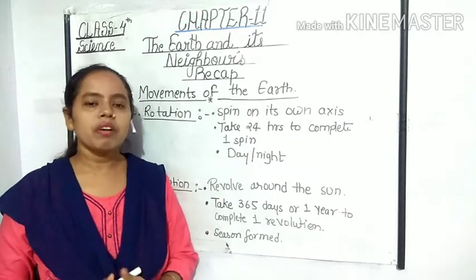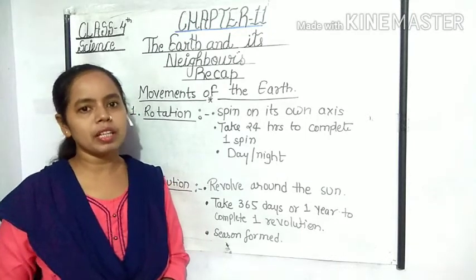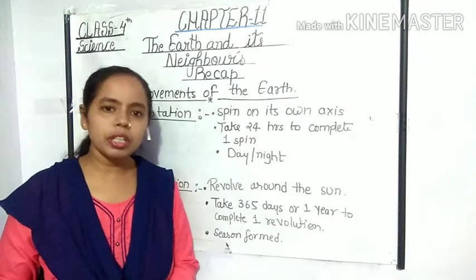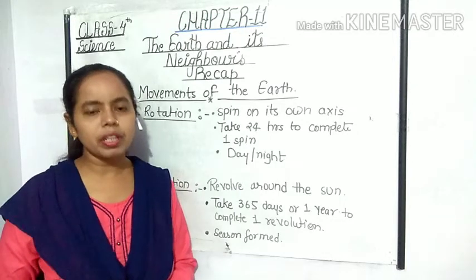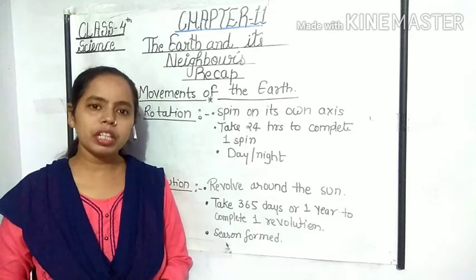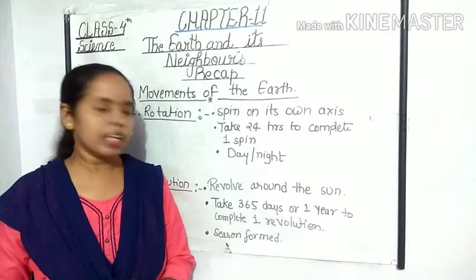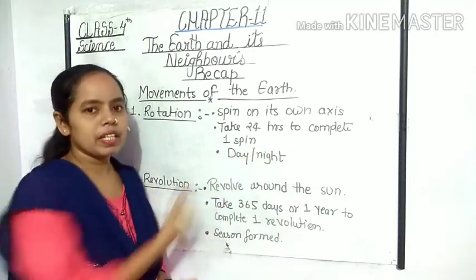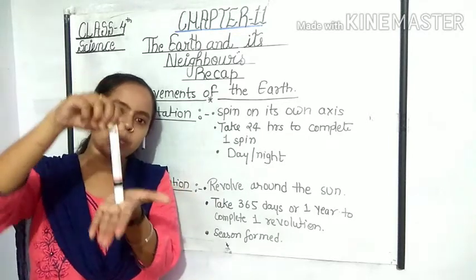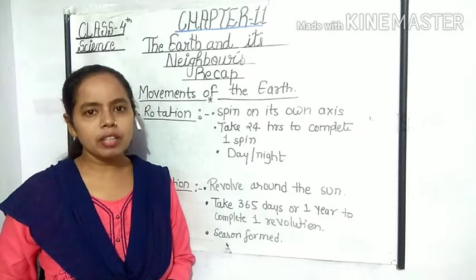The earth rotates on its axis from east to west direction. This spinning of the earth on its axis is called rotation. The earth takes 24 hours to complete one spin — that is one full rotation. So the earth takes 24 hours, or one day, to complete one spin.